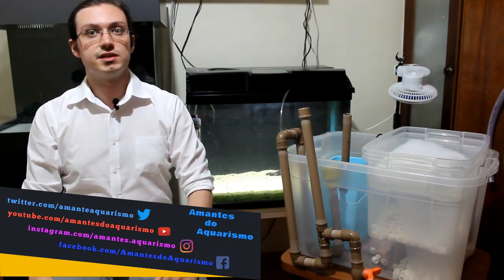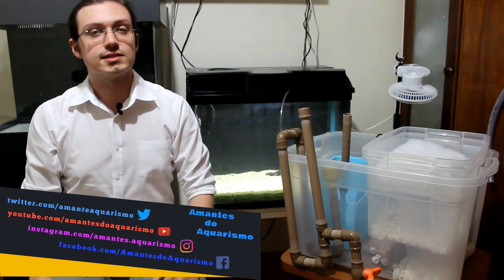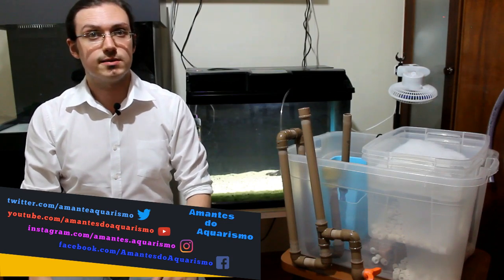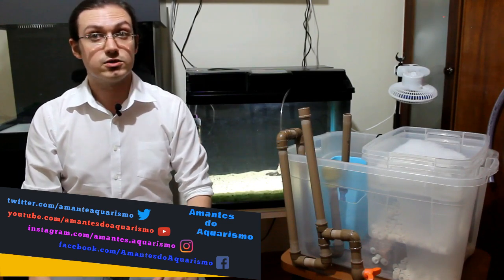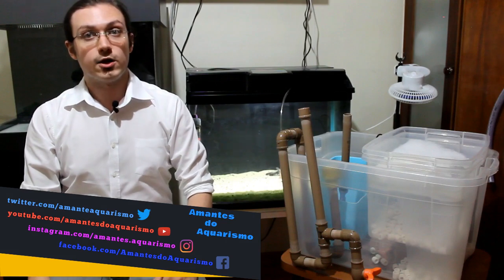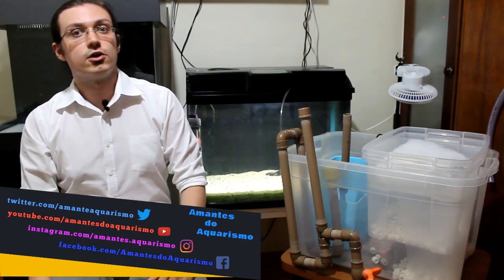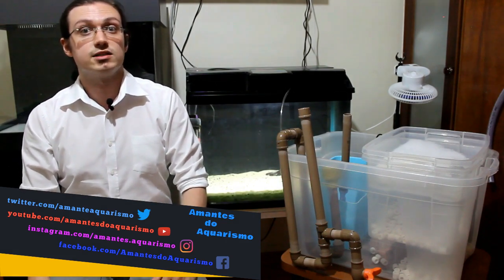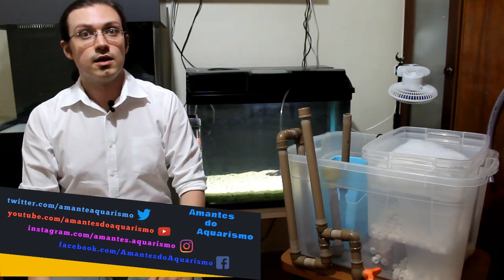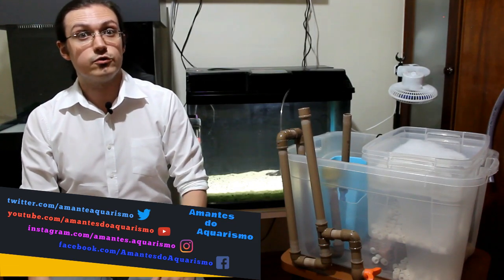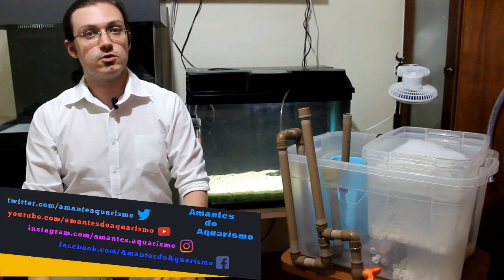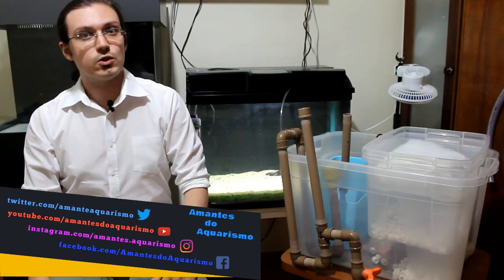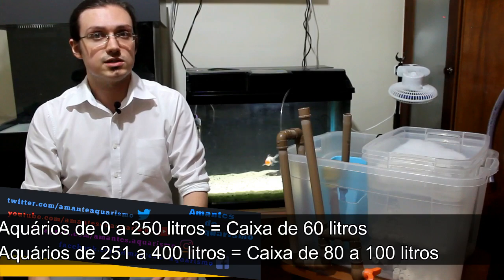Agora indo para a montagem. A primeira coisa que temos que fazer é escolher o tamanho das caixas que serão o nosso Samp. Normalmente se recomenda que o Samp tenha pelo menos 20% do volume do aquário. Quanto maior o Samp, melhor. Dessa forma, estamos usando uma caixa grande de 60 litros, que é equivalente a 60% do volume do nosso aquário de 100 litros. Esse Samp que estamos montando atenderia tranquilamente um aquário de até uns 250 litros.